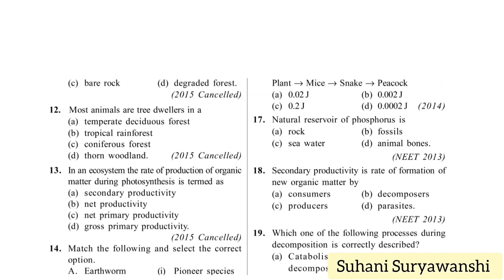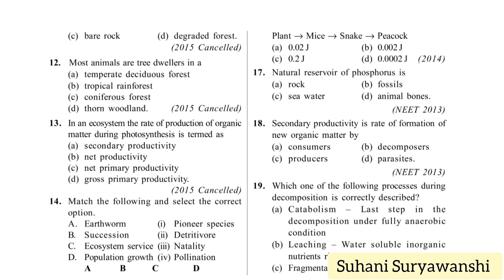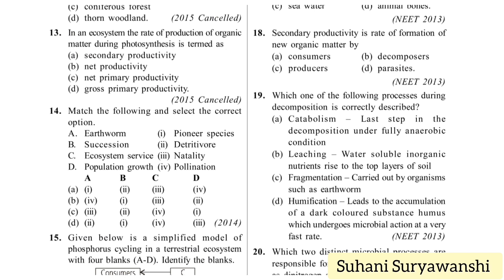The natural reservoir of phosphorus is rock, option A, because phosphorus shows sedimentary cycling. Secondary productivity is the rate of formation of new organic matter by consumers.